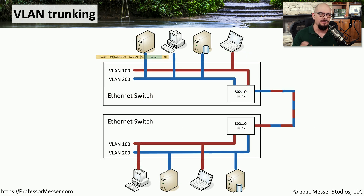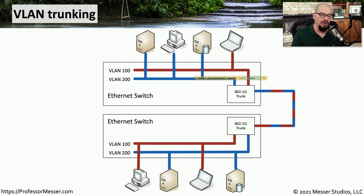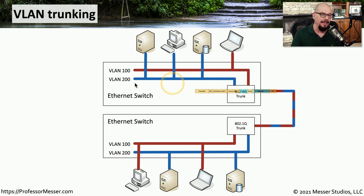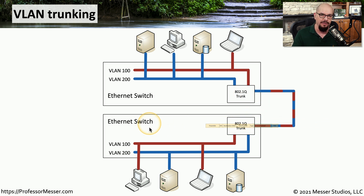Let's see how trunking works in a practical form. A device on VLAN 200 wants to communicate with another device on VLAN 200 on a separate ethernet switch. It sends the information over the network toward the 802.1Q trunked interface, which adds a VLAN header inside the ethernet frame designating that it originated on VLAN 200, and sends it to the 802.1Q interface on the other switch. That switch examines the VLAN header, sees it originated on VLAN 200, removes the VLAN header, and places the frame onto the VLAN 200 network.